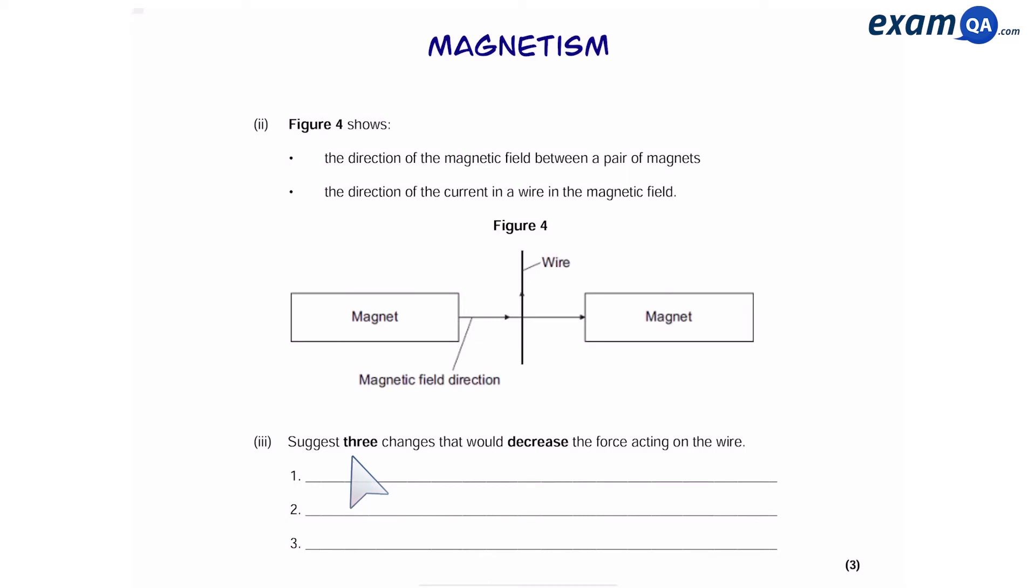State three changes that will decrease the force acting on the wire. One is to decrease the current in the wire. The second one is to use a weaker magnetic field. You can do this by either using weaker magnets or you can use the same magnets and move them further away from each other, then the magnetic field becomes weaker. And the third one is to rotate the magnets so they are no longer perpendicular to the wire. We can see that the magnet and the wire is perpendicular. There's a 90 degrees angle between the field and the wire. When it's perpendicular, we have maximum force. However, if we turn the wire or the magnets such that they are no longer 90 degrees, then the force acting on the wire reduces. Perpendicular, always maximum force. Not perpendicular, weaker force.